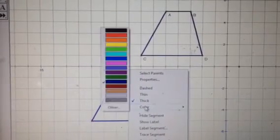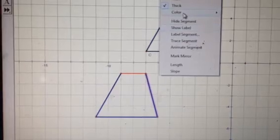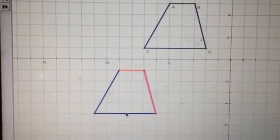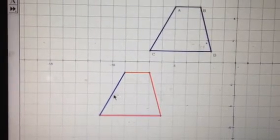And what you can do here is just change colors. Color change so you can see the translation. I'm just right clicking on the line segments.